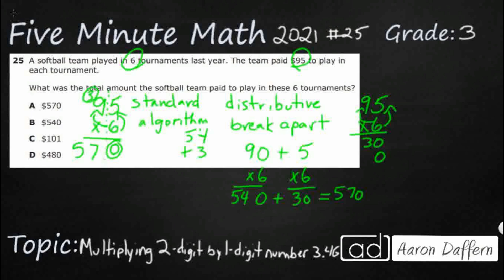If you do it like this in two different rows, that's going to be that same 54. And guess what you get? Your 570. You have to add those up at the end. So this right here is the same thing as this right here. These two are both using the distributive property break apart.